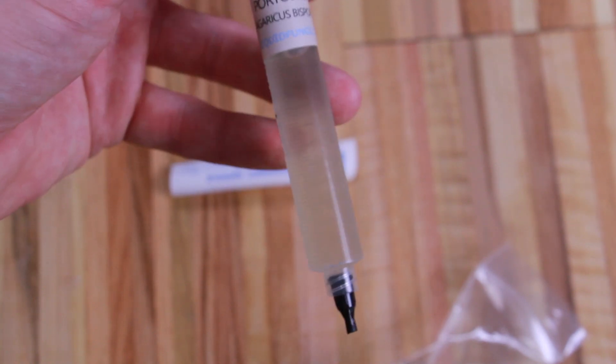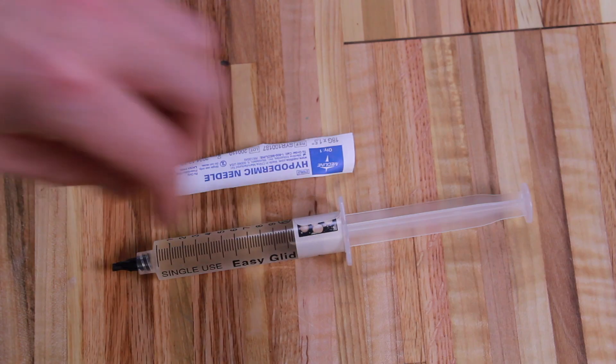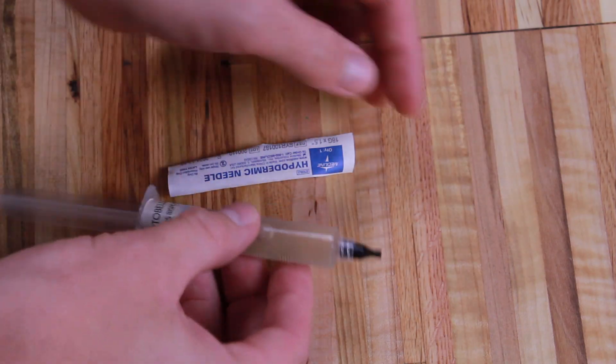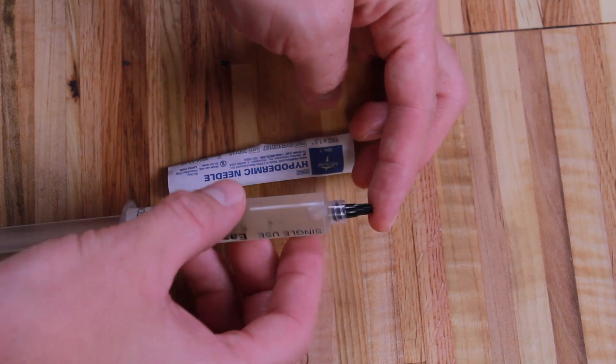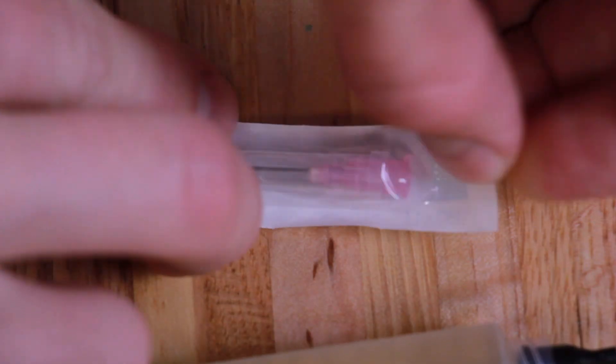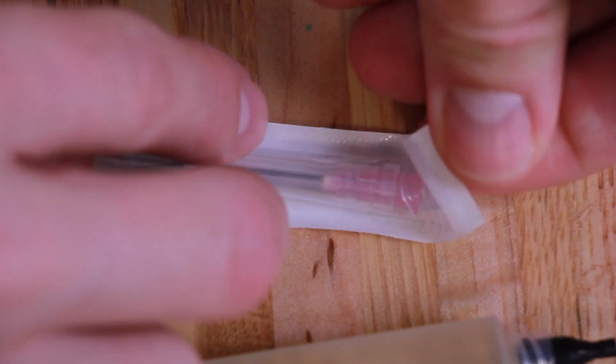The end of the syringe usually has a plastic plug installed in it and the hypodermic needle comes in a sealed plastic pouch. When you open that pouch it's going to expose the open end of the needle to outside air so be careful with that.